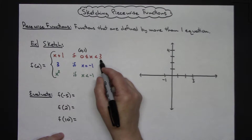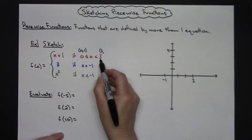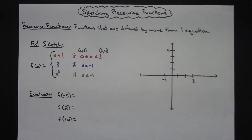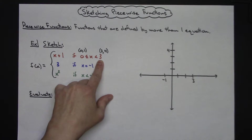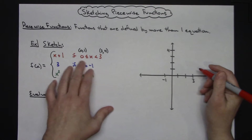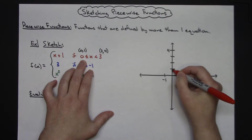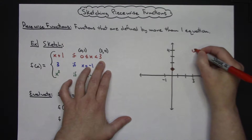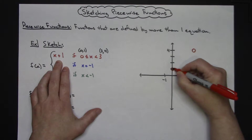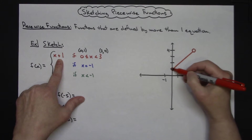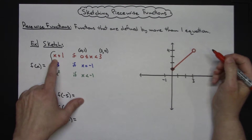Now I'll generate the other endpoint. When x is 3, plug it in: 3 plus 1 gives me 4, so the ordered pair is (3, 4). Since the constraint is x less than 3, I do not want to include this point, so it will be an open dot. So I'll put a closed dot at (0, 1) and an open dot at (3, 4), then draw a straight line between them. I'm just sketching, so I won't worry about making the slope exactly 1.